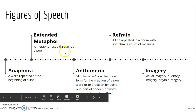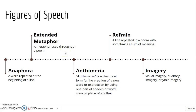An extended metaphor, as I told you last time, is a metaphor that is used throughout a poem. An example is John Donne's use of the compass compared to the two lovers in 'A Valediction: Forbidding Mourning.' And in this particular poem, you can find that the continent of Africa is compared to a woman throughout the poem. So that's an example of an extended metaphor.